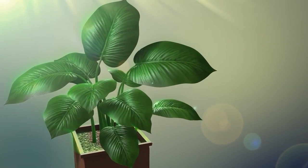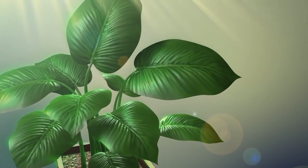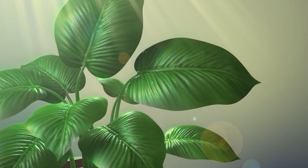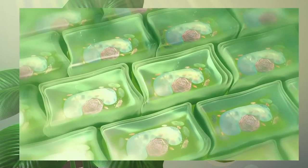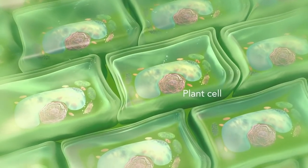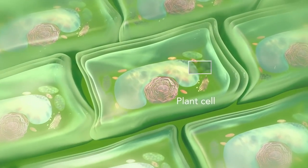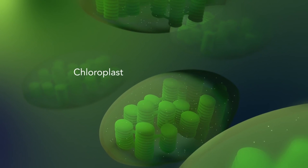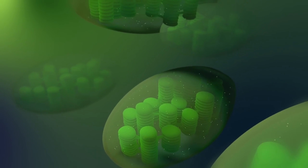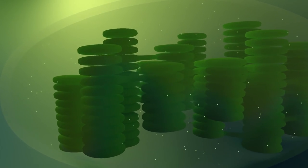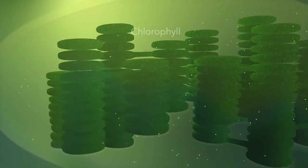Some organisms, such as plants that are photo-autotrophic, meaning they capture sunlight for energy, have cells with an organelle called a chloroplast. The chloroplast is where photosynthesis happens. It's green because it has a green pigment called chlorophyll.